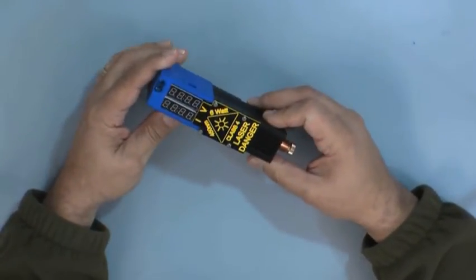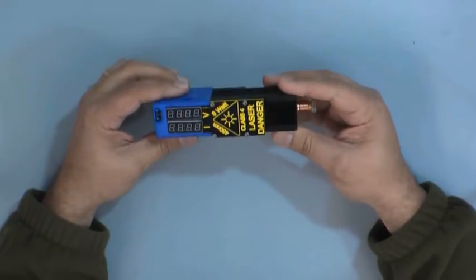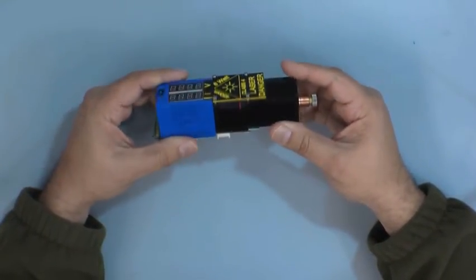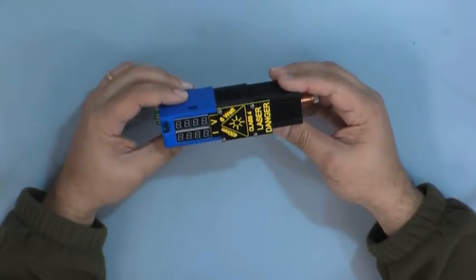We also have a 5 watt laser at 808 nanometers, which is red light. That's good for dark materials, but it will bounce right off of white paper.